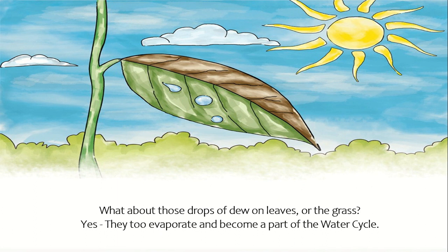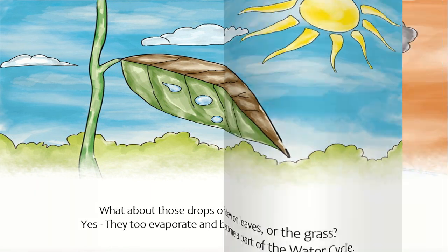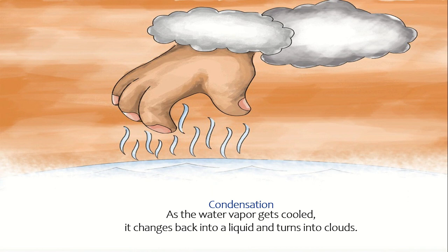What about those drops of dew on leaves or the grass? Yes, they too evaporate and become a part of the water cycle. Condensation: As the water vapor gets cooled, it changes back into a liquid and turns into clouds.